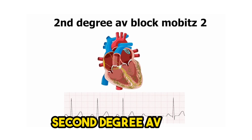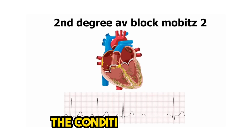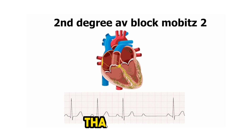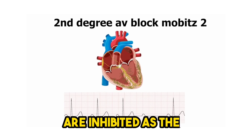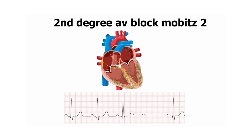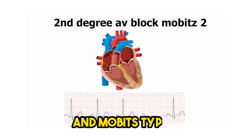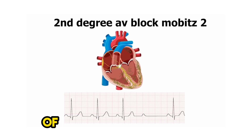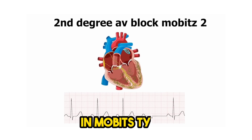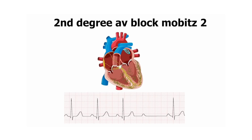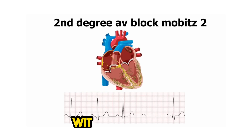Second-degree AV block occurs when some of the electrical signals that control the heartbeat are inhibited as they pass through the AV node. Mobitz type I, Wenckebach, and Mobitz type II are the two varieties of second-degree AV block. In Mobitz type I, the electrical signals are progressively delayed until one signal is entirely blocked. In Mobitz type II, some electrical signals are stopped without warning.